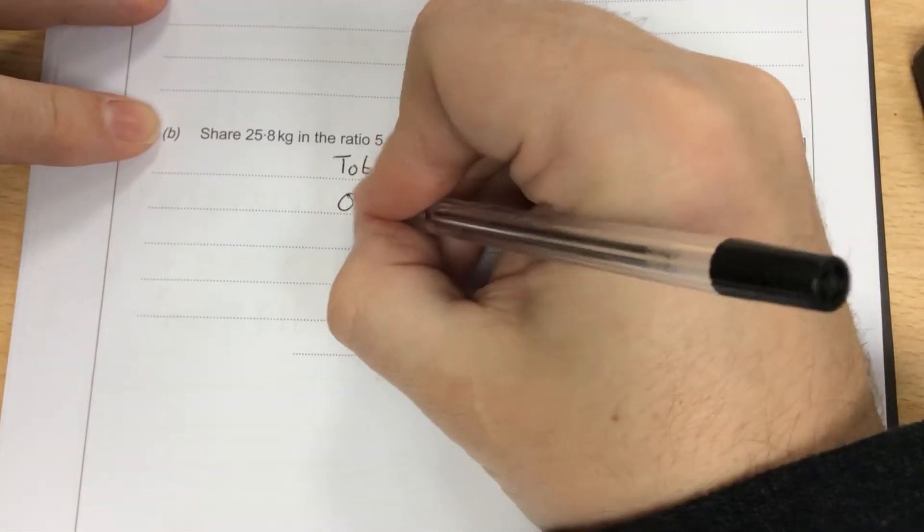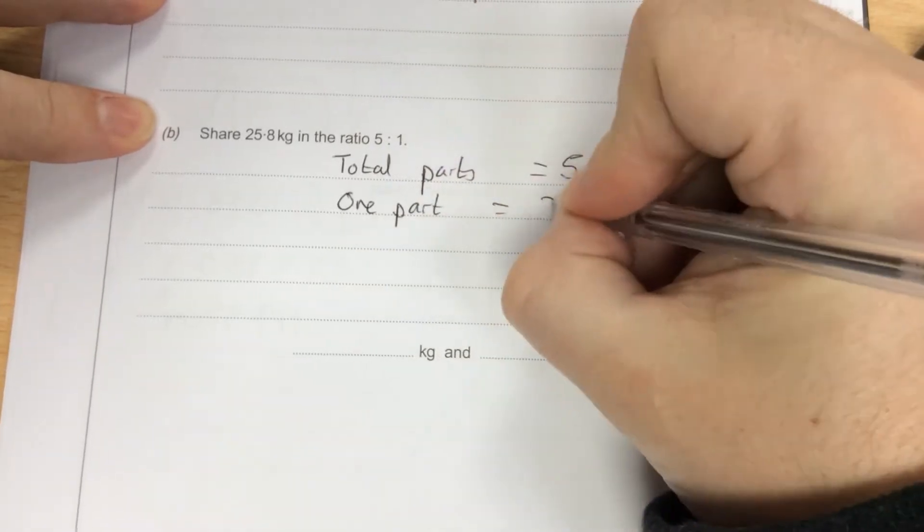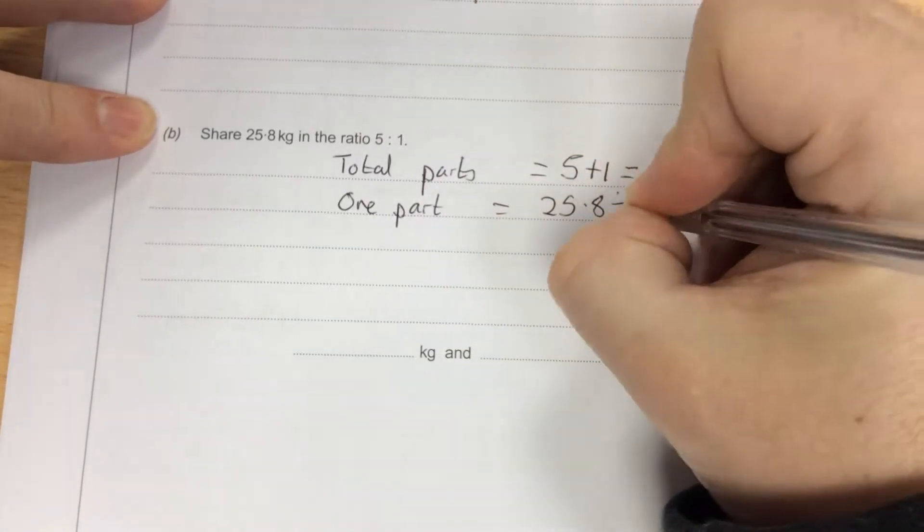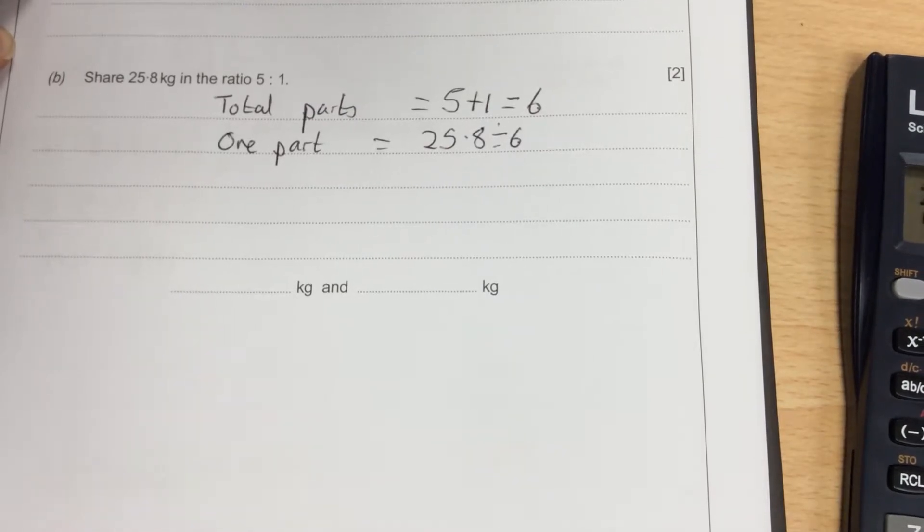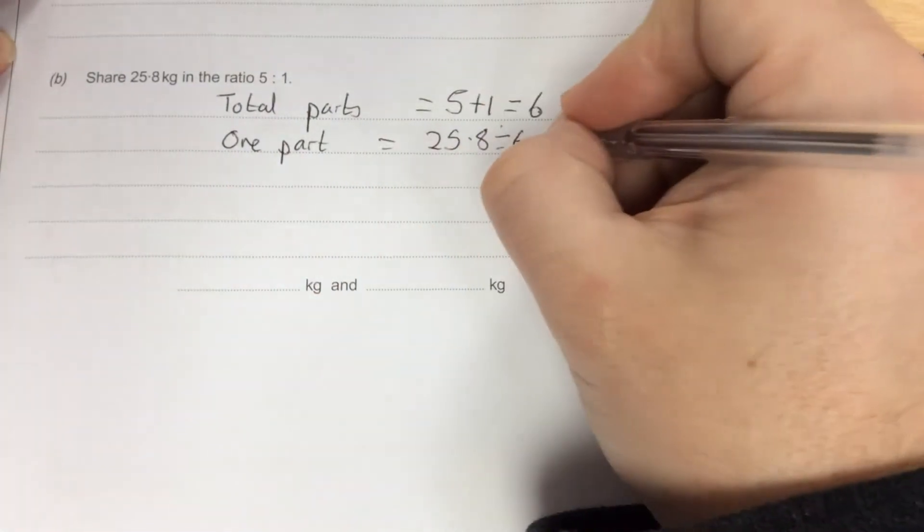So then 1 part is going to be 25.8 divided by 6. So 25.8 divided by 6 is 4.3.